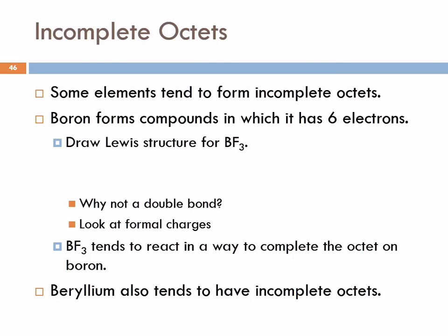Another way that molecules violate the octet rule is an incomplete octet. There's an even number of electrons, but they just don't make an octet for one of the atoms. This tends to happen with smaller elements like boron. So let's look at boron trifluoride. Boron tends to form compounds in which it has only six electrons. We've got boron and three fluorines, with three times seven valence electrons for the fluorine — that's 21 — and boron has three, so that's 24 total.